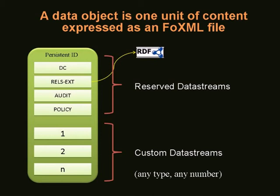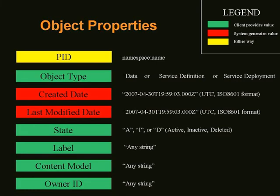Custom data streams are the components of the content of the object. These make up what you consider different parts of a single unit of content — your content data streams and metadata data streams. Generally it's a reference to a file somewhere else. The basic idea is your architecture of how you use Fedora is about building the patterns of data streams in the objects you build.